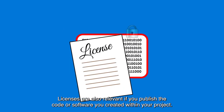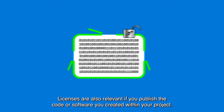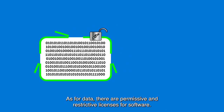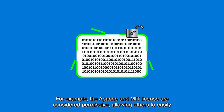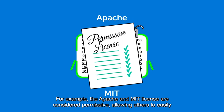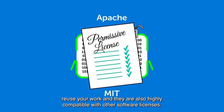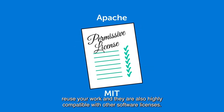Licenses are also relevant if you publish the code or software you created within your project. As for data, there are permissive and restrictive licenses for software. For example, the Apache and MIT licenses are considered permissive, allowing others to easily reuse your work, and they are also highly compatible with other software licenses.